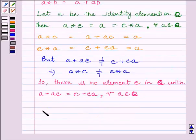So our final answer is: there is no identity element for binary operation star.